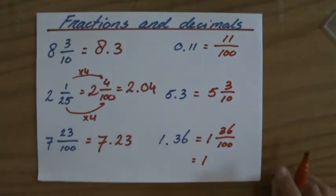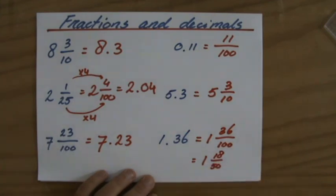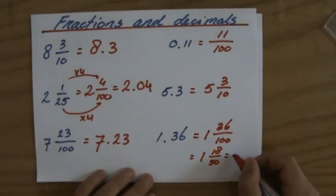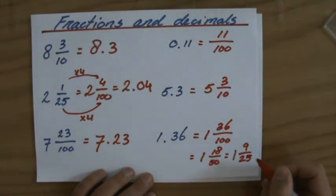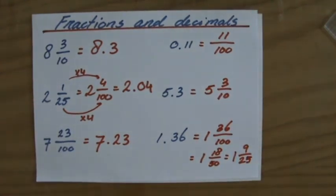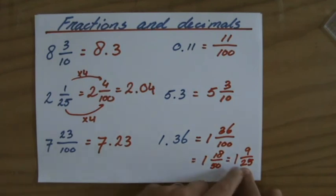So I can simplify that. Well, let's just divide them by 2, both of them. I always simplify in steps. No need to rush things. Divided by 2, that's 18 over 50. They're still even, so I'm going to divide both of them by 2 again. That's 9 over 25. Okay. 25 is a factor of 5, but 9 isn't. So 1 and 9 over 25 is the equivalent mixed number to 1.36.